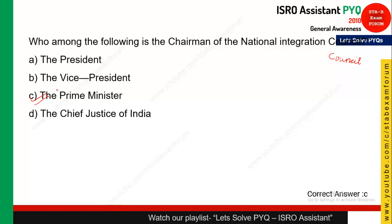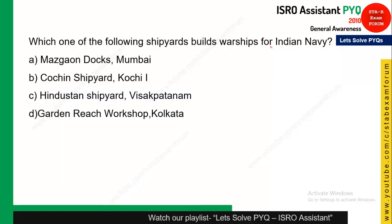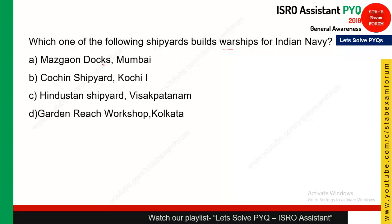Which of the following shipyards builds warships for the Indian Navy? Certain PSUs are making warships. The answer is Mazagon Docks, Mumbai. Mazagon Docks Mumbai builds warships for the Indian Navy. Just remember and note it down — this shipyard makes warships for the Indian Navy.